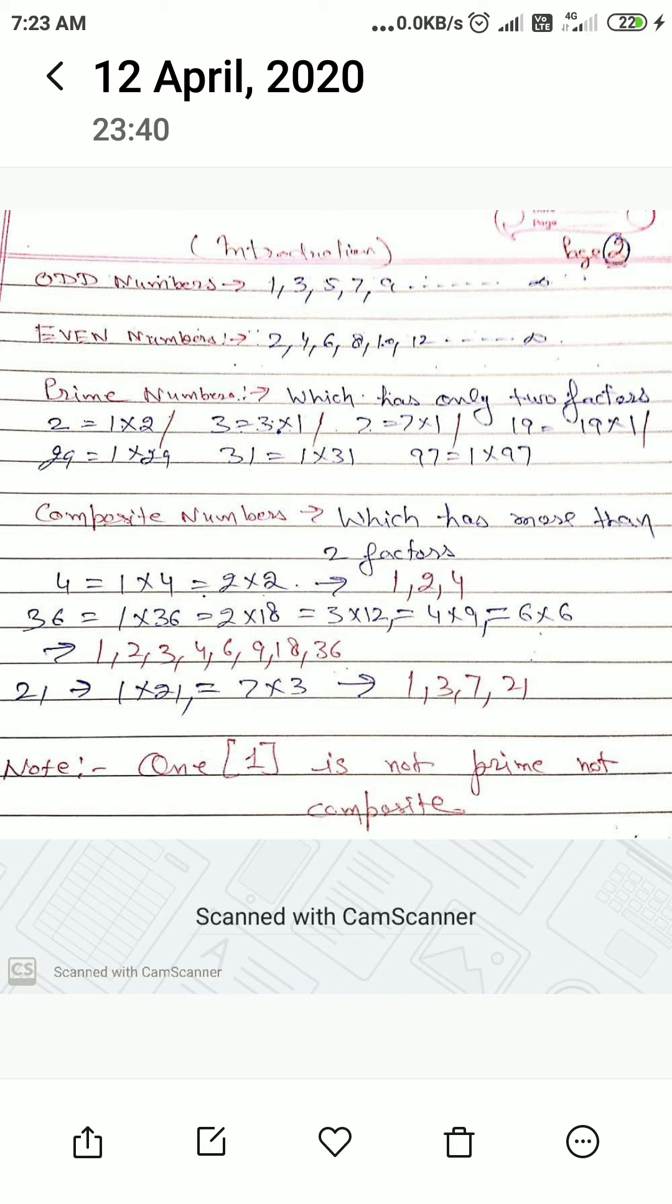Now come to odd numbers and even numbers. Such numbers which are not divisible by two are called odd numbers: one, three, five, seven, nine, and so on up to infinity.